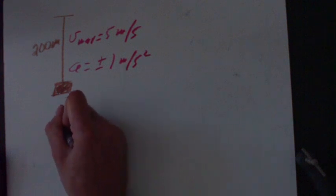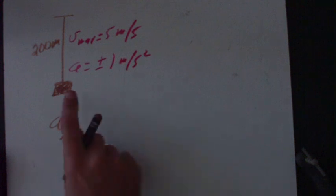In this particular problem, the first part asks how far does the elevator travel when it's between the times when it's starting at rest and reaches its maximum speed? So how much distance does it require to accelerate from zero meter per second to five meter per second?